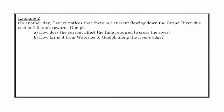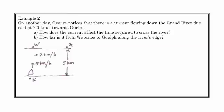So further then, here's example 2. On another day, George notices that there's a current flowing down the Grand River due east at 2 kilometers per hour. So now, he's in his boat, but now there's a current. So similar diagram, very similar diagram, setting this up, but we've got a current that we introduce of 2 kilometers an hour. So the first question here is, how does the current affect the time required to cross the river? And so the answer is, is it going to affect it at all? He still has to cross 5 kilometers. He's still traveling at 5 kilometers per hour in that direction. The current may be pushing him downstream, but it really doesn't make a whole heck of a lot of difference to how long it's going to take him to cross.